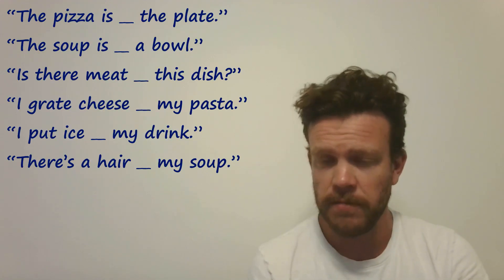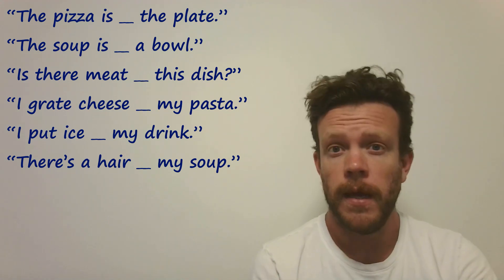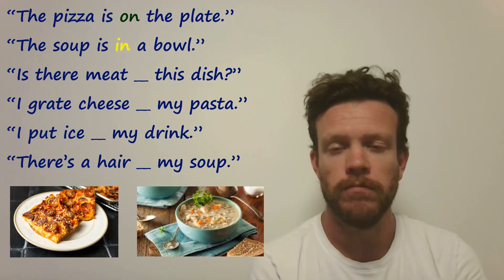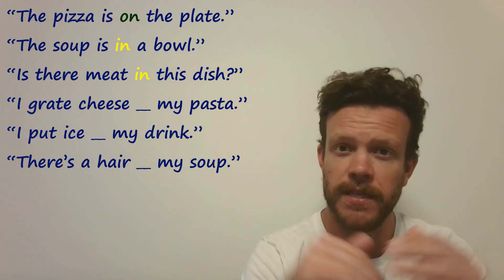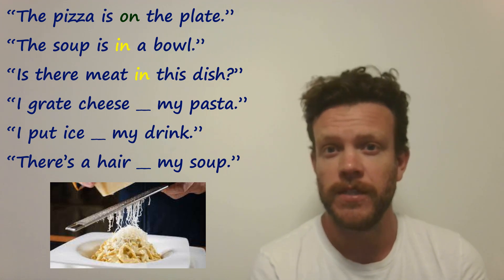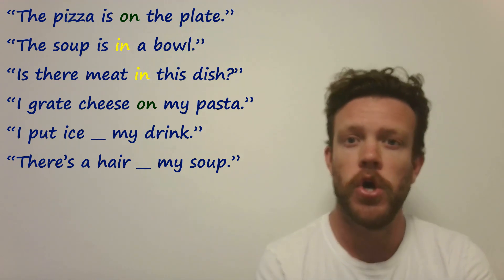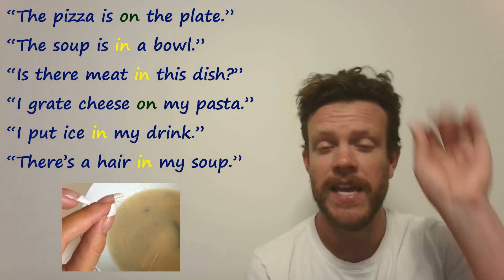Another situation we're going to practice is with food — same concept. If it's talking about the surface, use 'on'; if it's inside or surrounded by, use 'in.' Pause and try to complete these sentences. Well done if you said: the pizza is on the plate, whereas the soup is in a bowl — surrounded by the bowl. You might ask: is there meat in this dish — inside the dish? Then: I grate cheese on pasta — onto the surface. Same with: I put ketchup on fries, I put jam on toast. And: I put ice in my drink, or there's a hair in my soup.